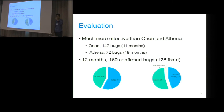Let's talk about the evaluation. We ran Hermes for 12 months. We found 160 confirmed bugs in GCC and LLVM, of which more than 128 are already fixed. It's pretty effective.